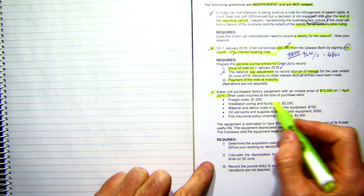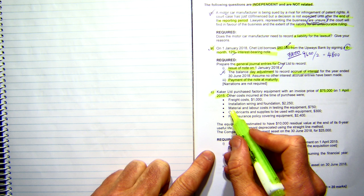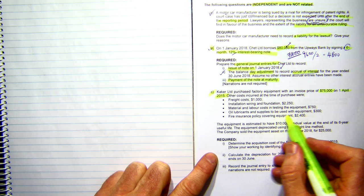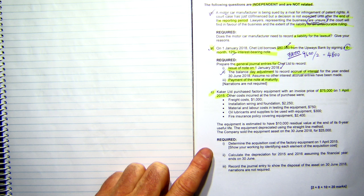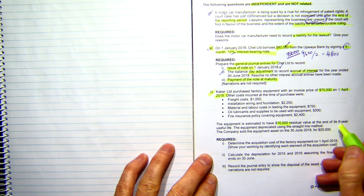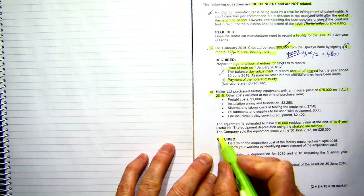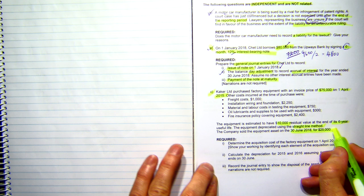Other costs incurred at the time of purchase were freight costs of $1,000, installation and wiring of $2,500, material and labor costs in testing the equipment of $750, oil lubricants and supplies to be used with the equipment $300, fire insurance policy covering the equipment $2,400. The equipment is estimated to have a residual value of $10,000 after its six-year life. The equipment depreciation used a straight-line method. The company sold the equipment asset on the 30th of June 2018 for $25,000.